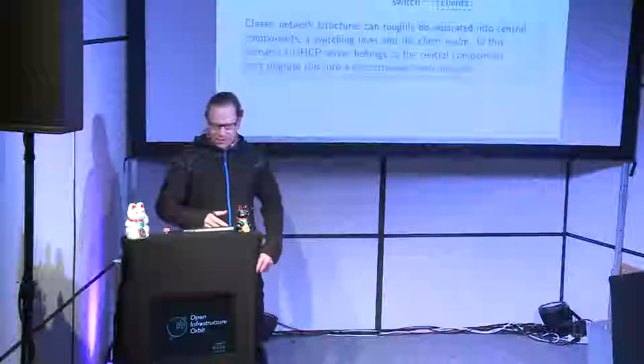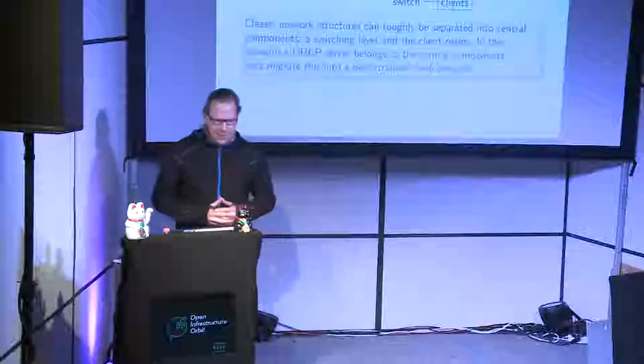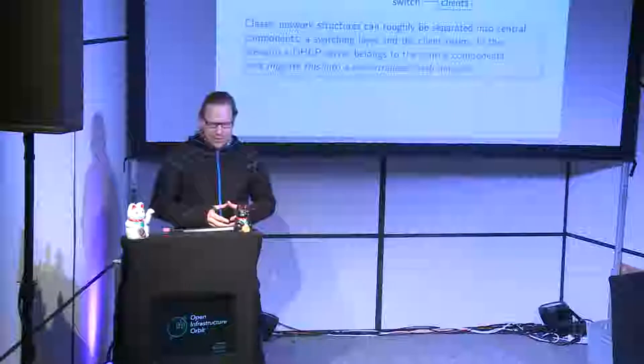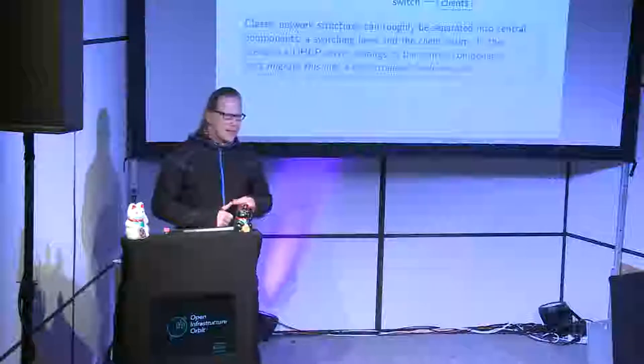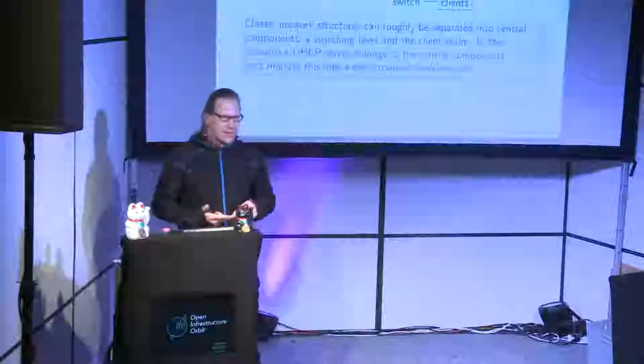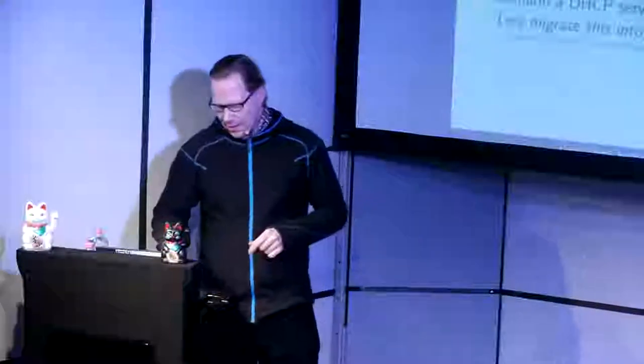Let's see how networks look in the environment DHCP was designed for. Classical network structures can really be separated into three parts: the central stuff — gateways, DNS servers, and the DHCP server — then a switching layer, mostly big cable boxes, and behind that the clients. When we migrate to mesh networks, we basically replace the switching layer with mesh nodes.